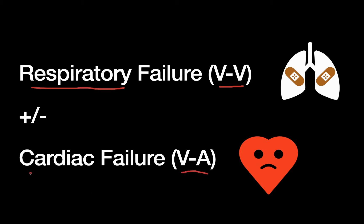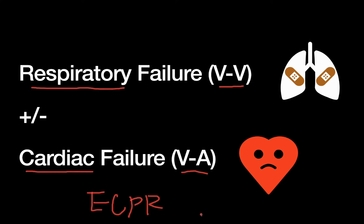VA ECMO is a heart and lung bypass circuit. Patients are on this usually for some problem with cardiac failure or primary heart failure. This can be patients coming in after a massive heart attack or myocardial infarction, or patients who have longstanding heart failure and develop cardiogenic shock. We also use VA ECMO for what we call ECPR — extracorporeal cardiopulmonary resuscitation — using the VA ECMO circuit to completely bypass the heart and lungs, providing continuous flow instead of chest compressions.